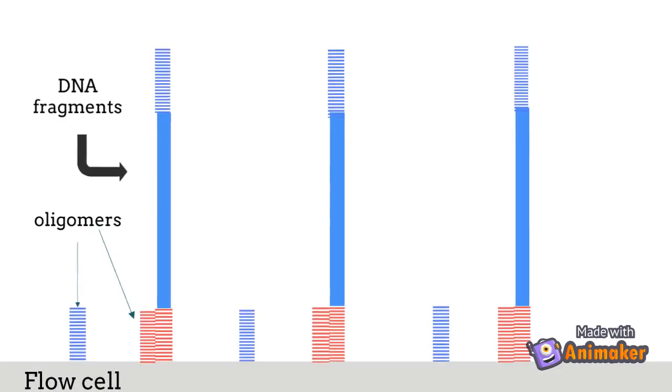PCR amplification of the fragments produces DNA clusters across the flow cell. Sequencing of the forward strands is performed via DNA synthesis by DNA polymerase.